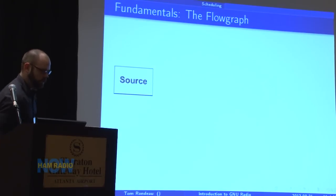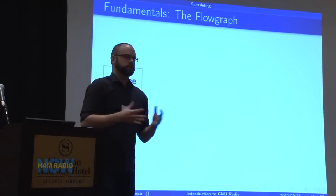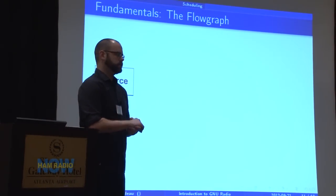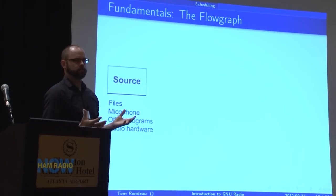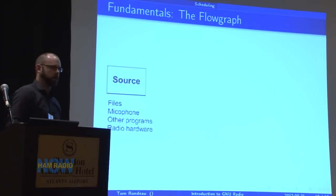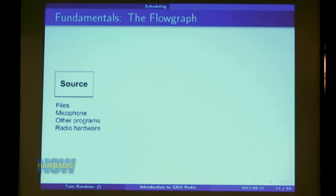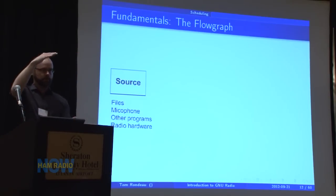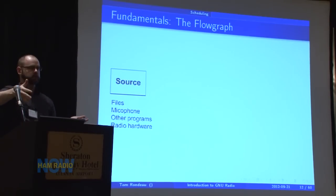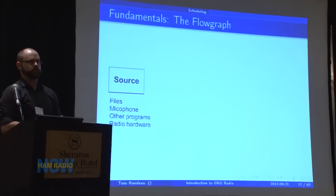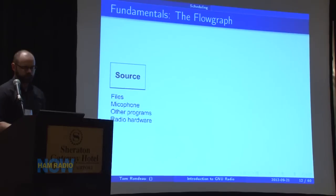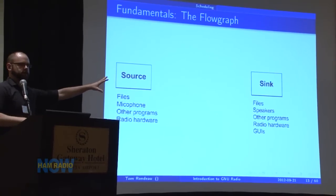Everything else really just hangs off the scheduler. What does the scheduler look like? We always have to have some source — some way of getting data into GNU Radio. You can have files, a microphone if you're doing audio, radio hardware so a receiver becomes a source into a GNU Radio block. You also want to be able to tie into other programs — if you have a network layer for doing IP-level networking over wireless, you want to be able to pull from the network layer. The Linux network stack is a good one. So we want to have various ways to tie this in with other programs.